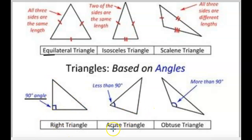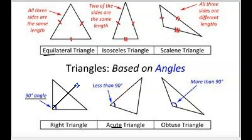Acute triangle — it sounds like 'cute' because it's so little. It's less than 90 degrees. Your acutes are less than 90, so that angle line will go like that, like that, or like that. Anyway, they're really, really small triangles, less than 90.